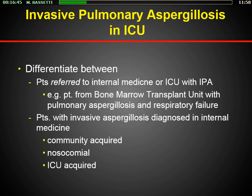When we discuss patients in the ICU, it's important to differentiate two types: patients referred to the ICU with invasive aspergillosis — the classical patient transferred from the bone marrow transplant unit — versus patients with invasive aspergillosis diagnosed in the ICU, with a community-acquired, nosocomial, or ICU-acquired form. I will focus today on the latter.